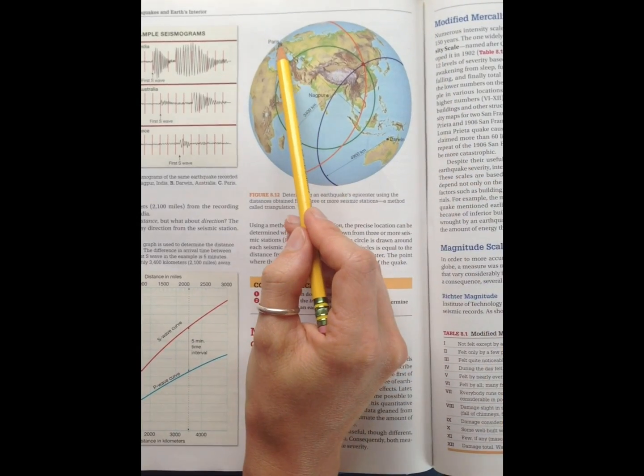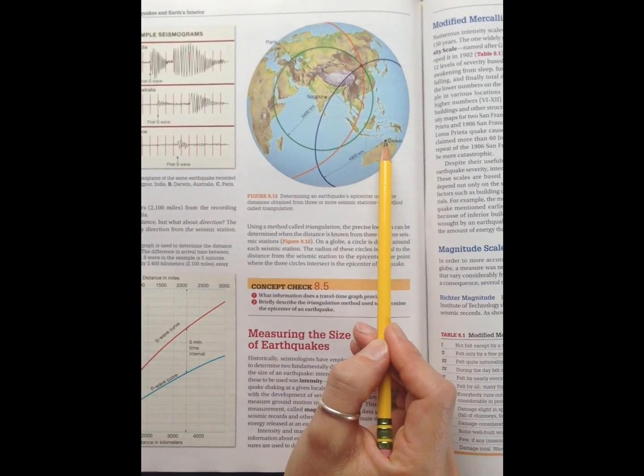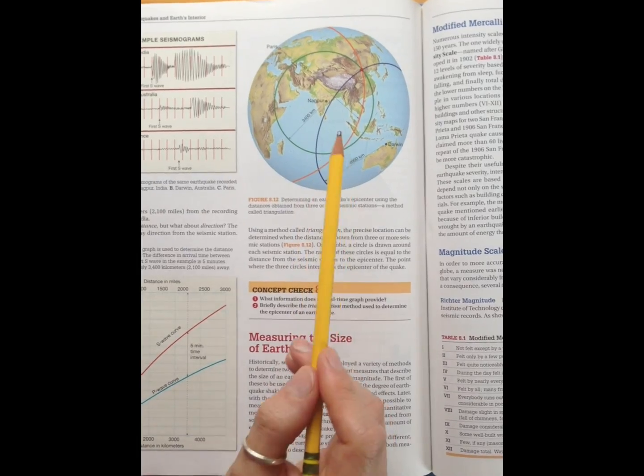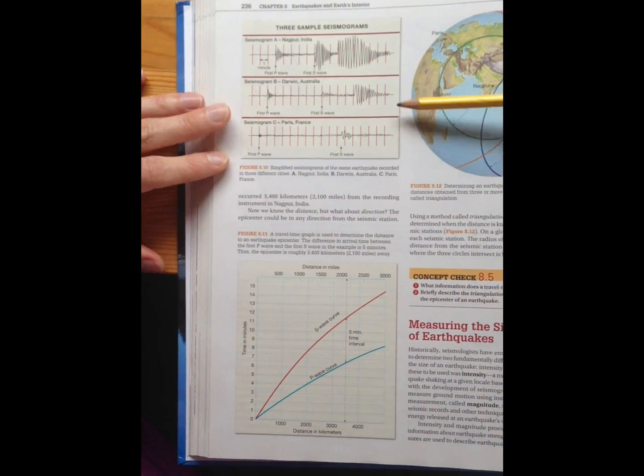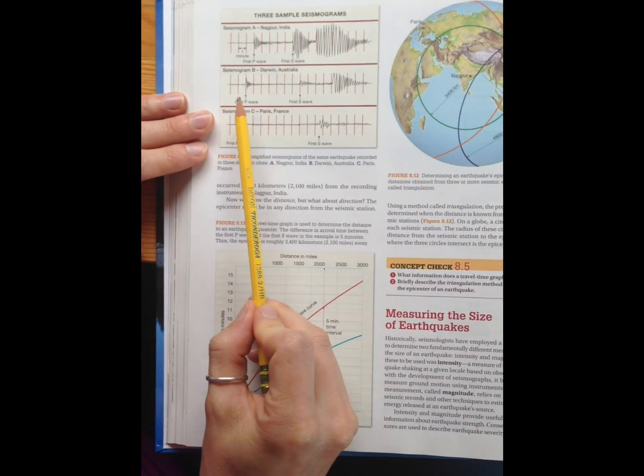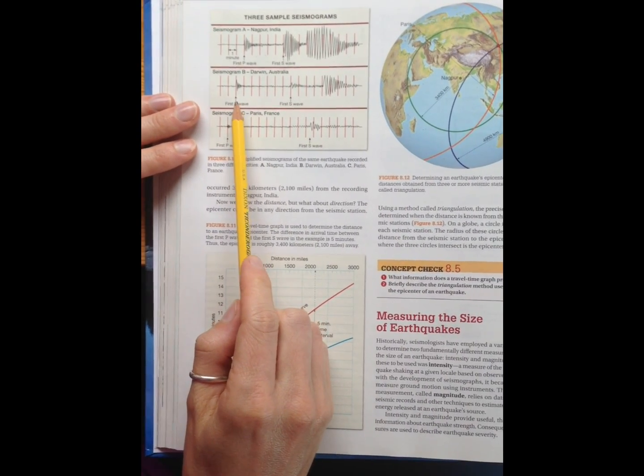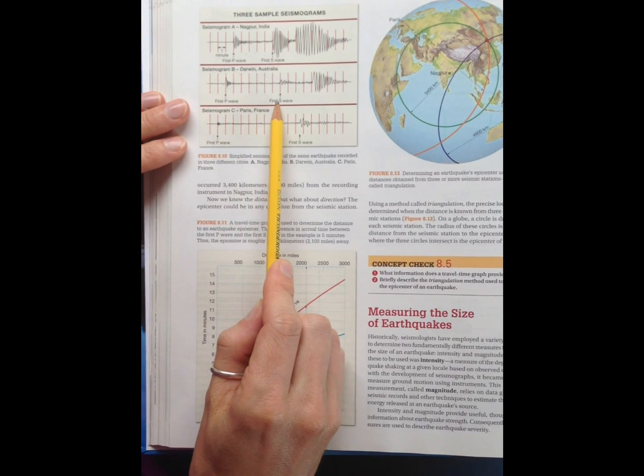So you call up your friends in Paris, and you call up your friends down in Darwin, Australia, and they do the same thing you did. If you look back over at the seismographs for both Australia and then in France, they determined the time difference between the arrival of the P waves and S waves.